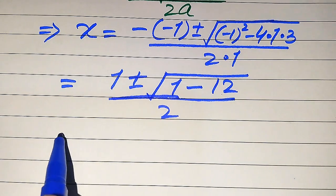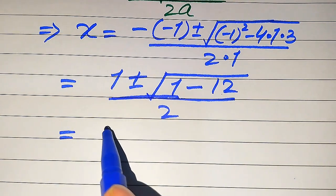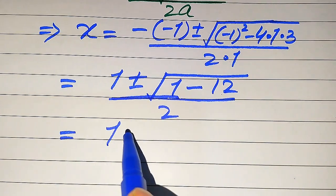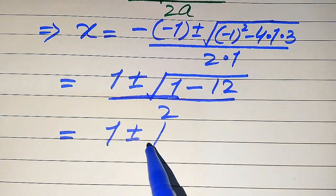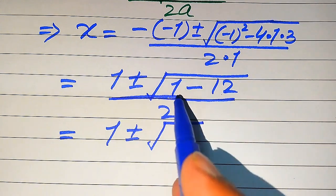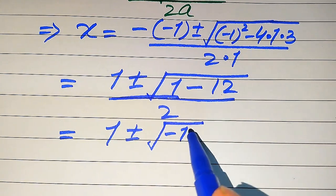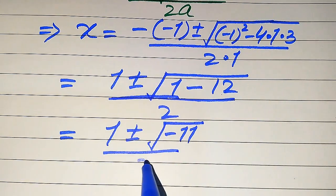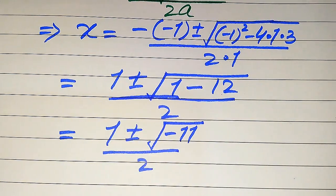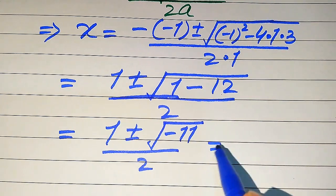Further simplification gives us 1 plus or minus square root of 1 minus 12, which equals the square root of minus 11, all divided by 2.